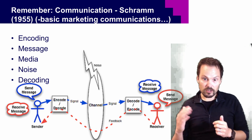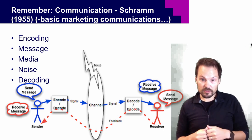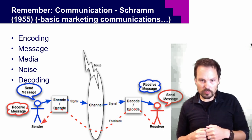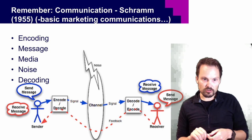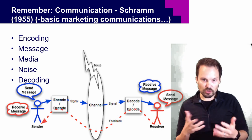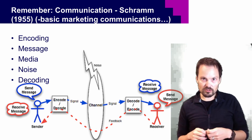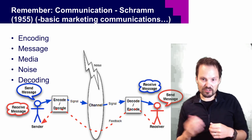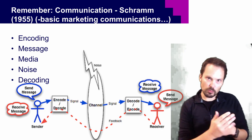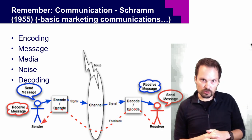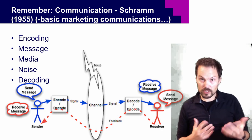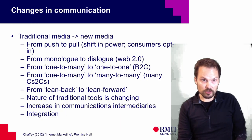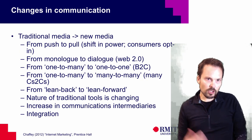What we get more of these days in a digital space is the feedback loop — previously shown as a dotted line because it was an assumed loop — but these days it goes much more directly through social channels in particular, and also through many other digital channels.